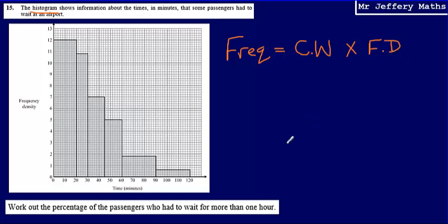In order to work out the percentage of passengers who had to wait for more than one hour, we first need to work out what proportion of the graph is taken up by these two bars here. So I'm going to work out the area of all the bars, then the area of these two bars separately, divide those, and that will give me the proportion.